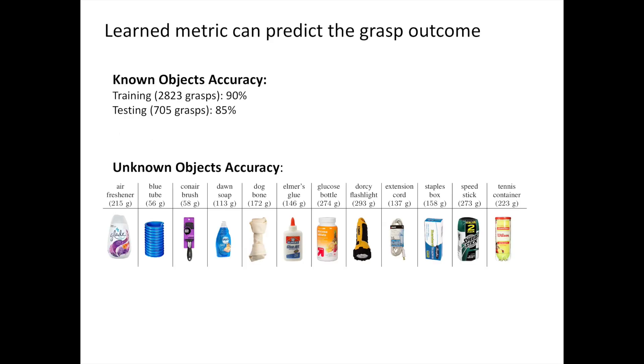Results show that the classifier learns to accurately predict the grasp outcome up to 85% in the case of known objects and 75% in the case of unknown objects.